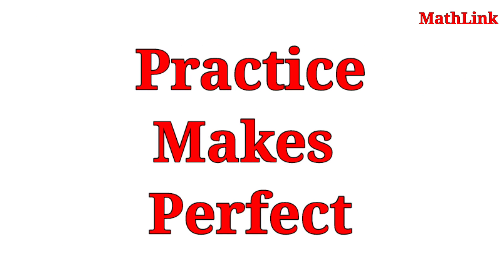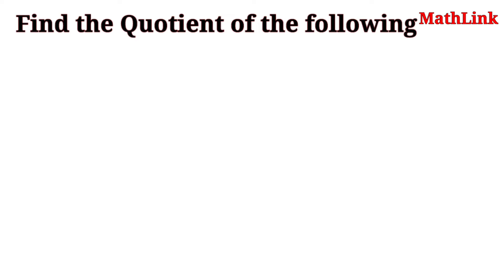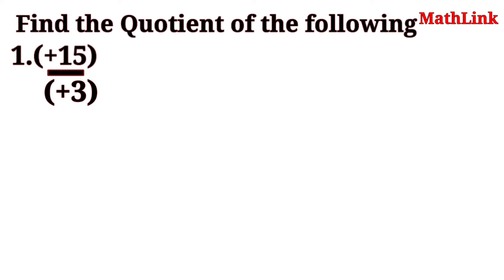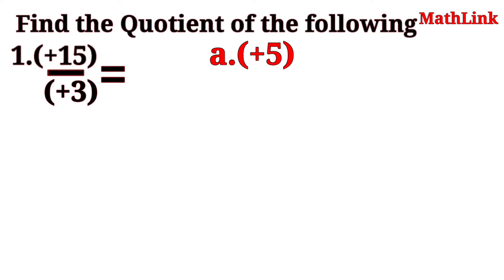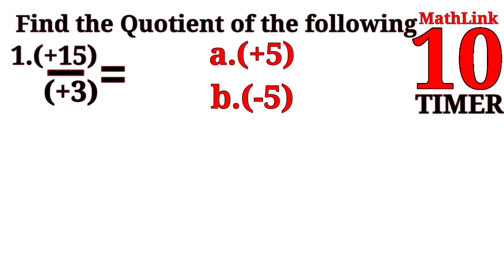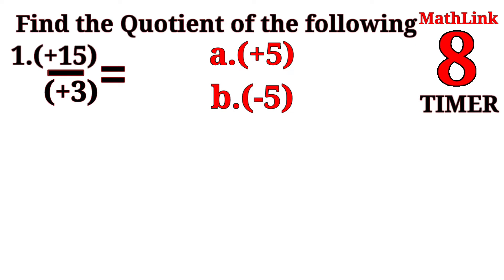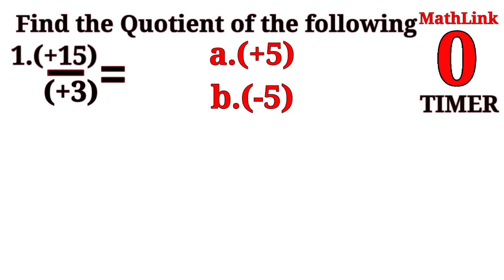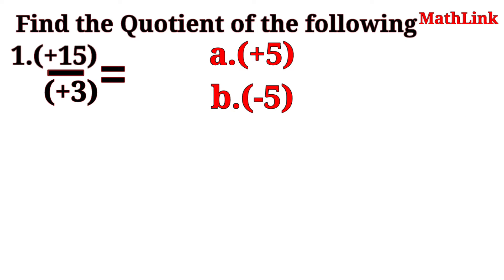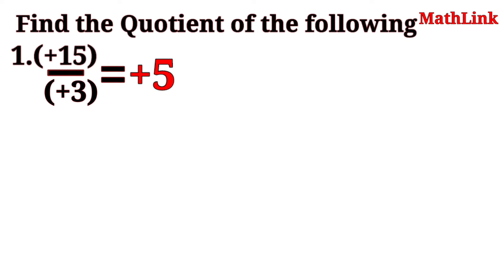Practice makes perfect. Find the quotient of the following numbers. Number 1: Positive 15 divided by positive 3 is equal to? Letter A: Positive 5. Letter B: Negative 5. The correct answer is letter A, positive 5 — positive sign because the two integers have the same sign.